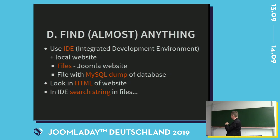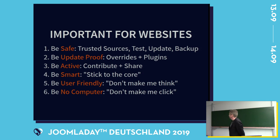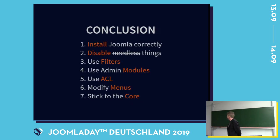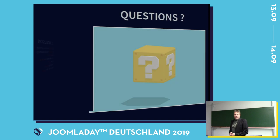So, important for websites: be safe, be update-proof, be active, be smart, be user-friendly, and be no-click. Things you can do: install Joomla correctly without example content; disable what you don't need; use filters; use admin modules; use ACL to create new profiles; modify menus; stick to the core; and use other techniques to accomplish what you want. That's it. Any questions?